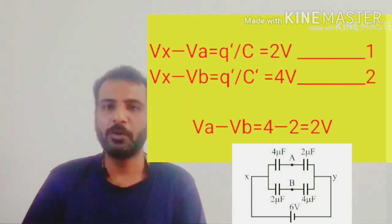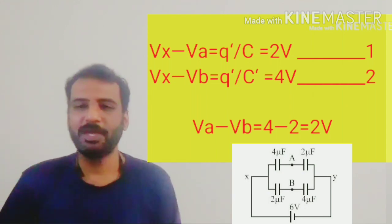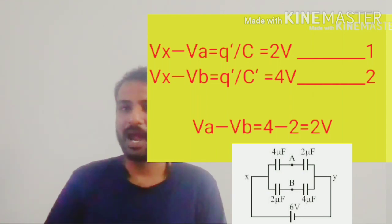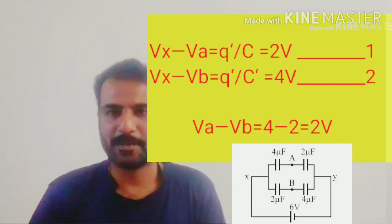Now subtracting these two equations 1 and 2 we end up saying VA minus VB is equal to 2 volts. And that's all for this one minute one concept. See you.